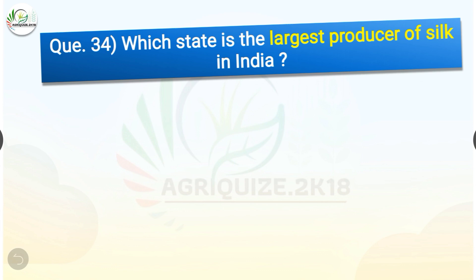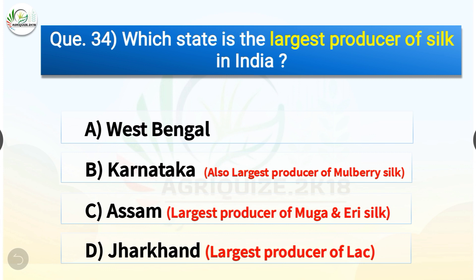Question number thirty-four: Which state is the largest producer of silk in India? The options are: West Bengal, Karnataka, Assam, or Jharkhand. The correct answer is option B — Karnataka. Karnataka is the largest producer of silk in India and also the largest producer of mulberry silk. Assam is the largest producer of Muga and Eri silk, and Jharkhand is the largest producer of lac.